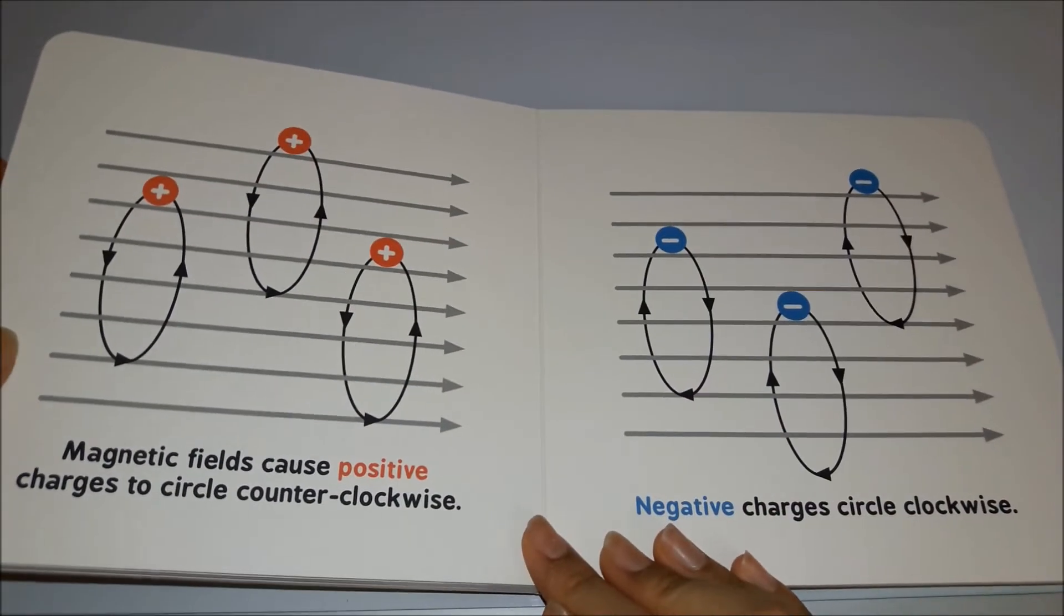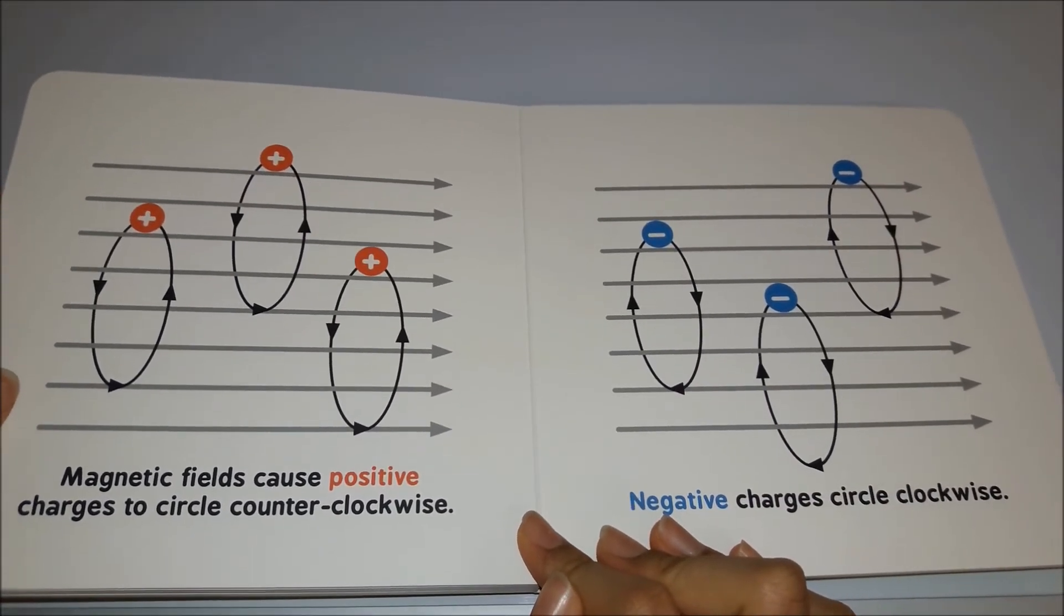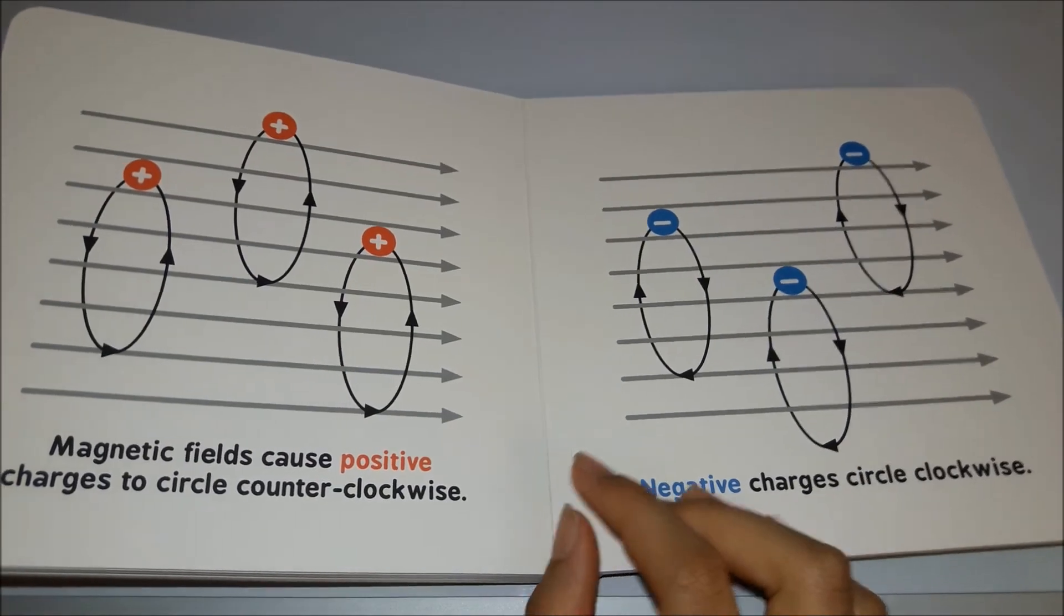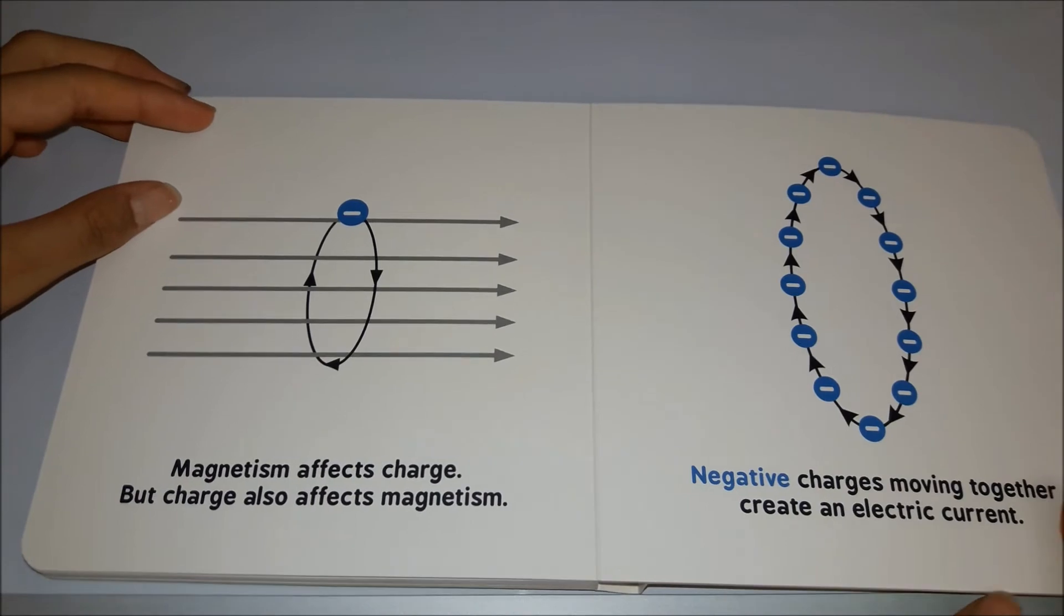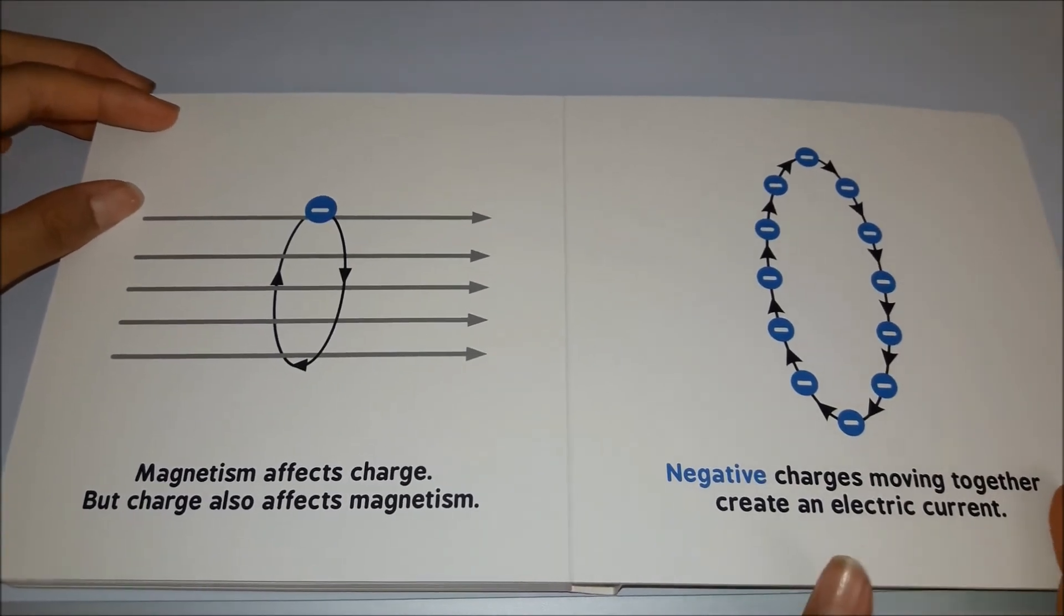Magnetic fields cause positive charges to circle counterclockwise. Negative charges circle clockwise. Magnetism affects charge, but charge also affects magnetism.